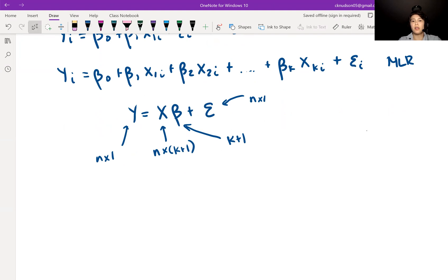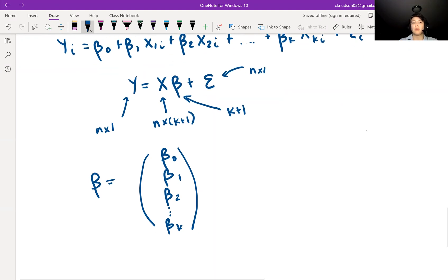So what does beta look like now so that it has dimension k plus 1? Now beta looks like beta 0, beta 1, beta 2, all the way down to beta k. So we can see that there are k plus 1 of these betas because we have 1 through k and we also have 0. So that's why we have k plus 1 as the number of betas that we have.